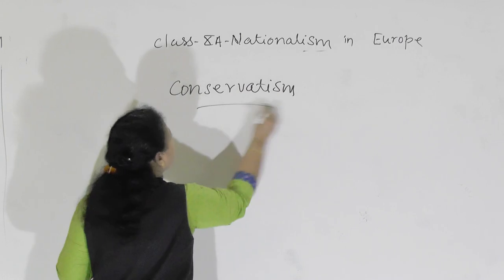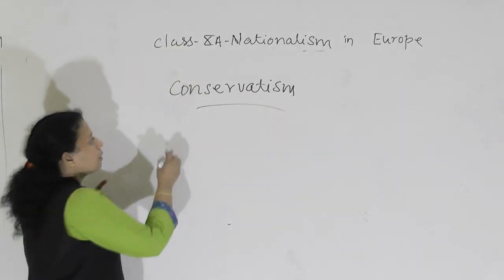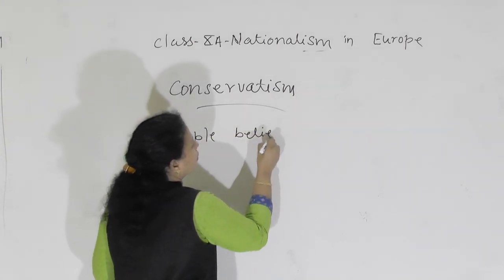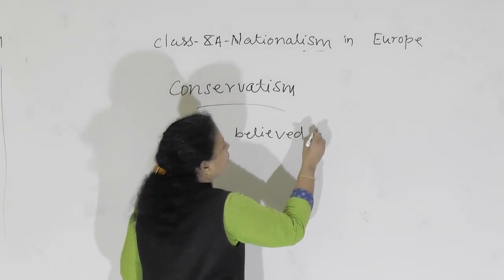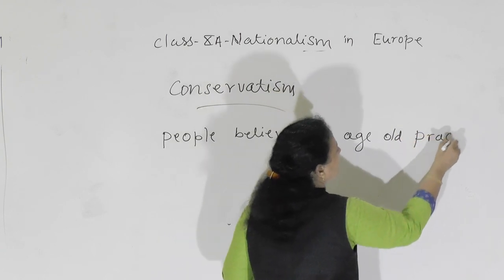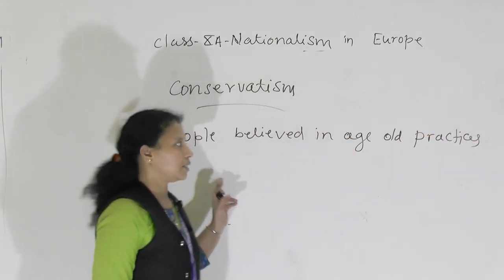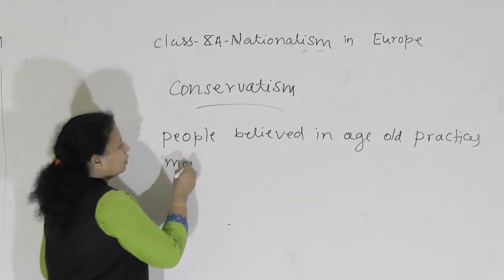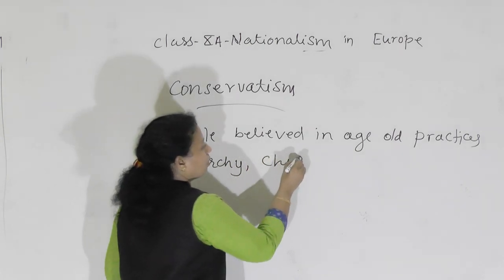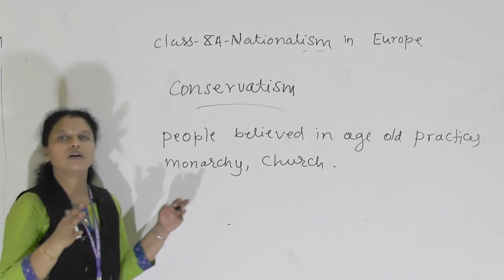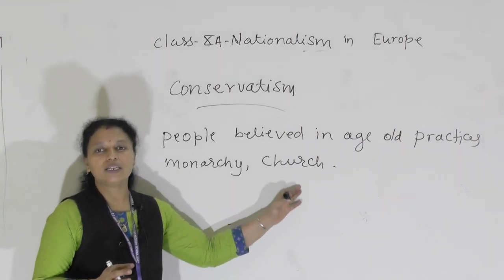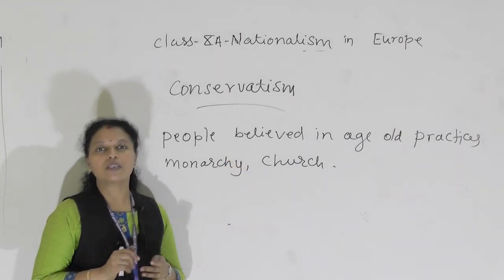Another important term is conservatism. What is conservatism? Conservatism means these were people who believed in age-old practices. They believed in monarchy and did not want any nation-state. They also believed in the church, old institutions, and tradition. They did not support nation-state formation and were strict adherents to the monarch, church, and old institutions. They were known as conservatives.